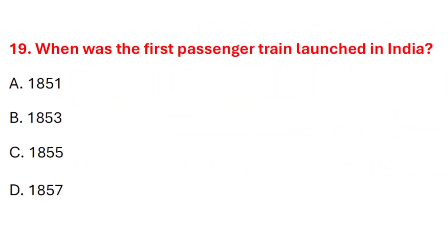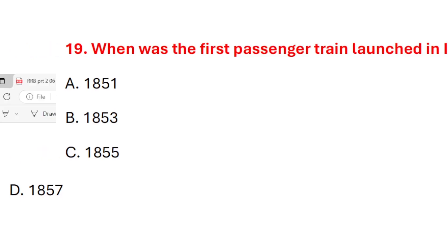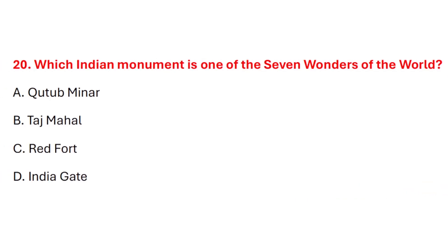Question 19. When was the first passenger train launched in India? Correct answer is option B: 1853. Question 20. Which Indian monument is one of the seven wonders of the world? Correct answer is option B: Taj Mahal.